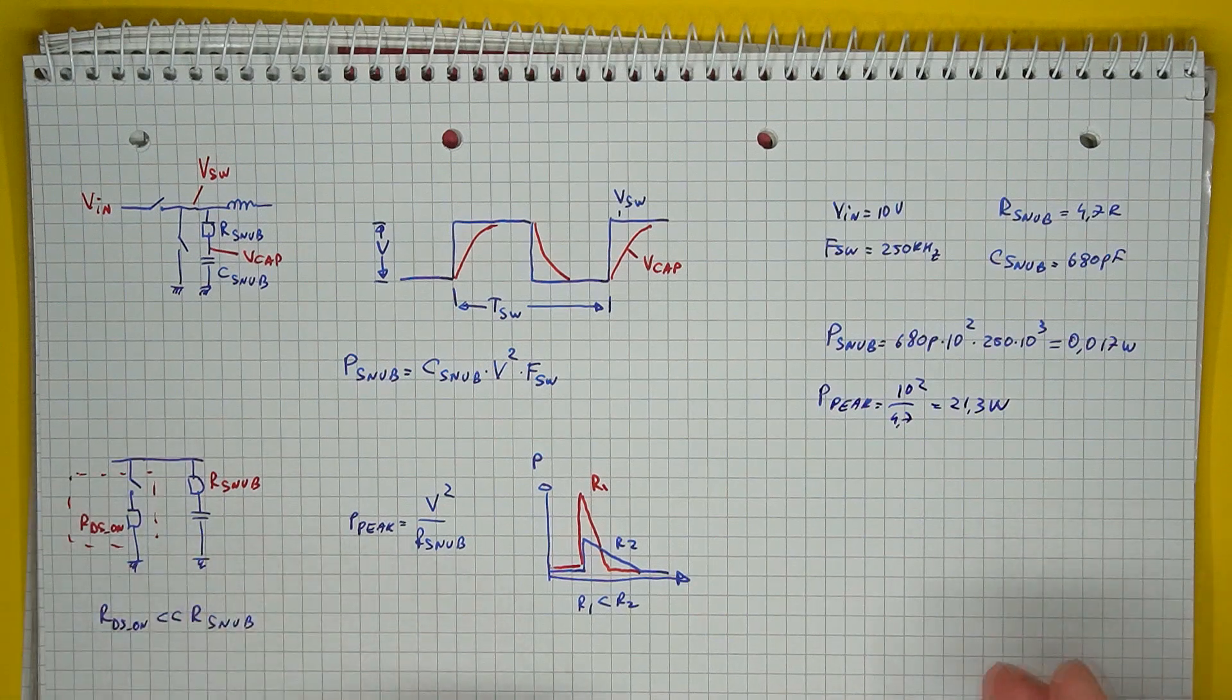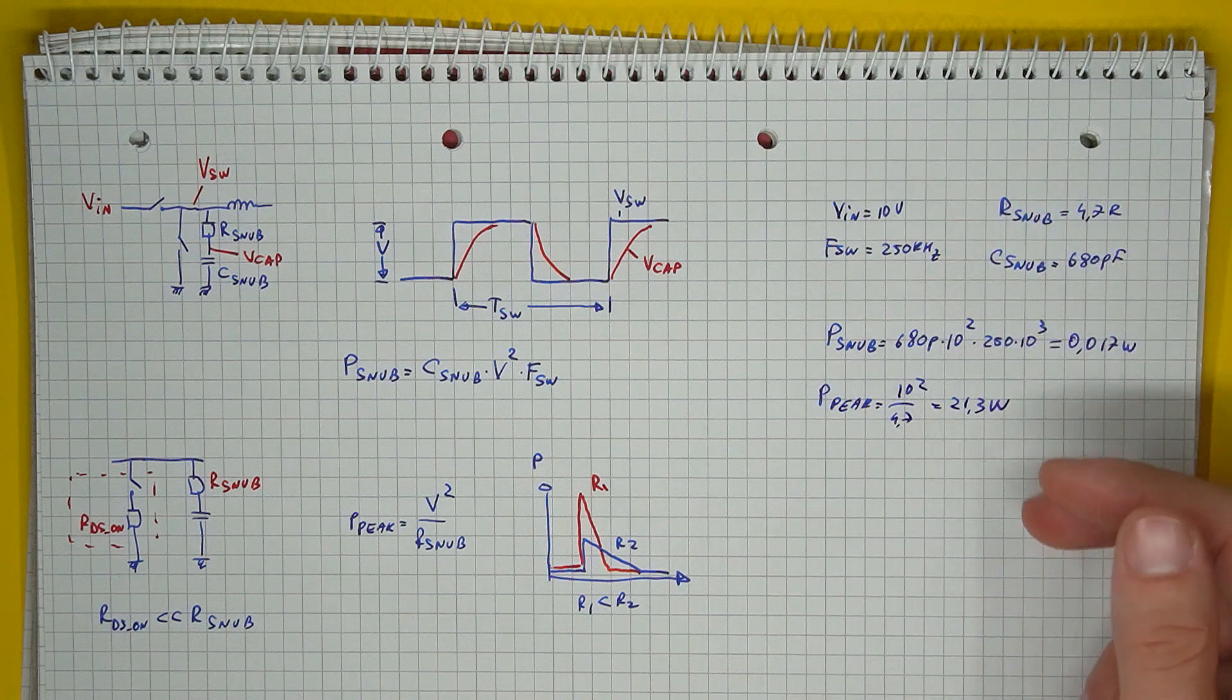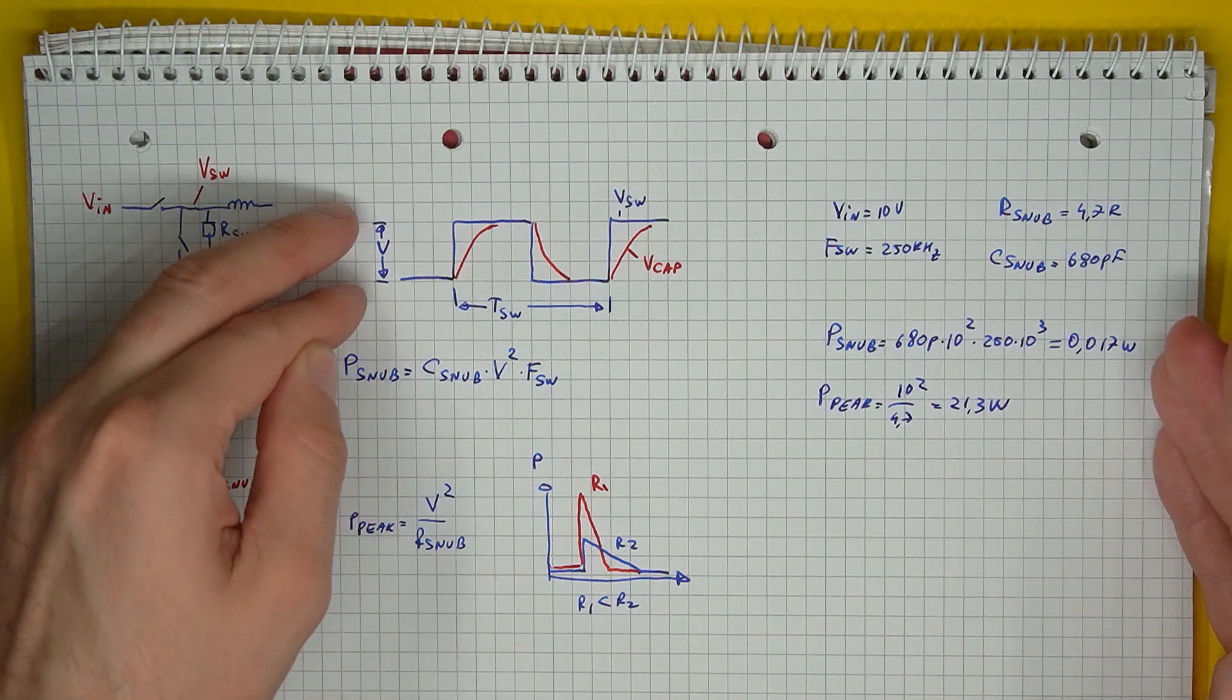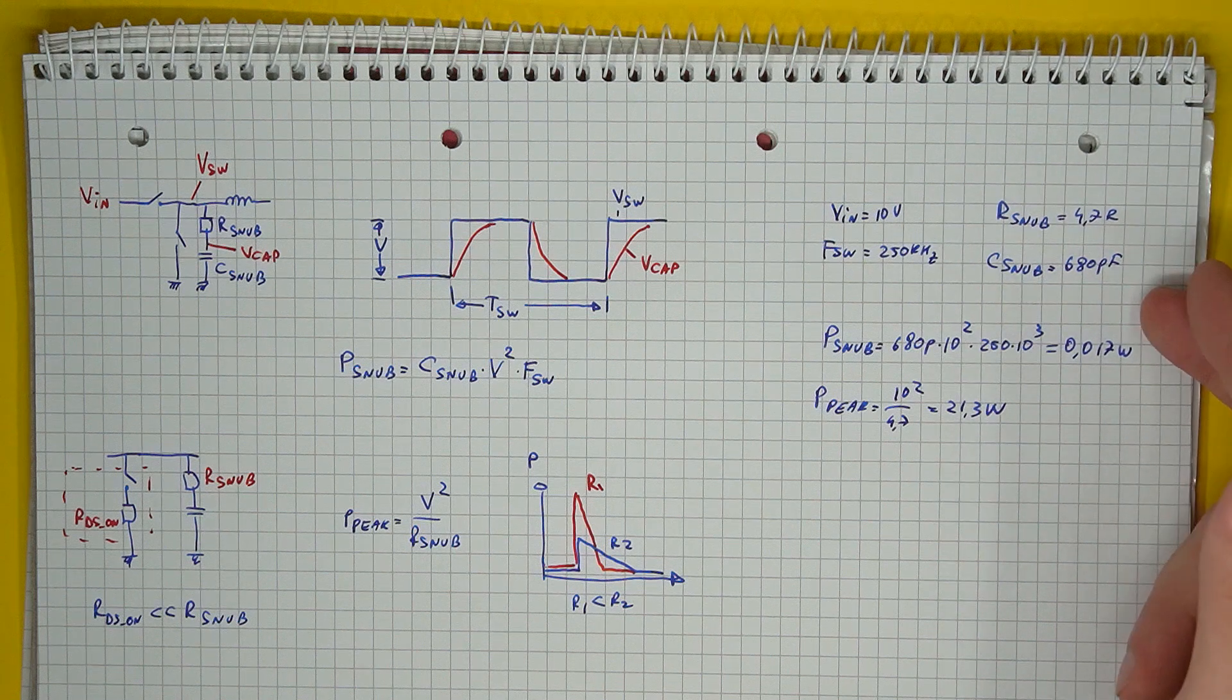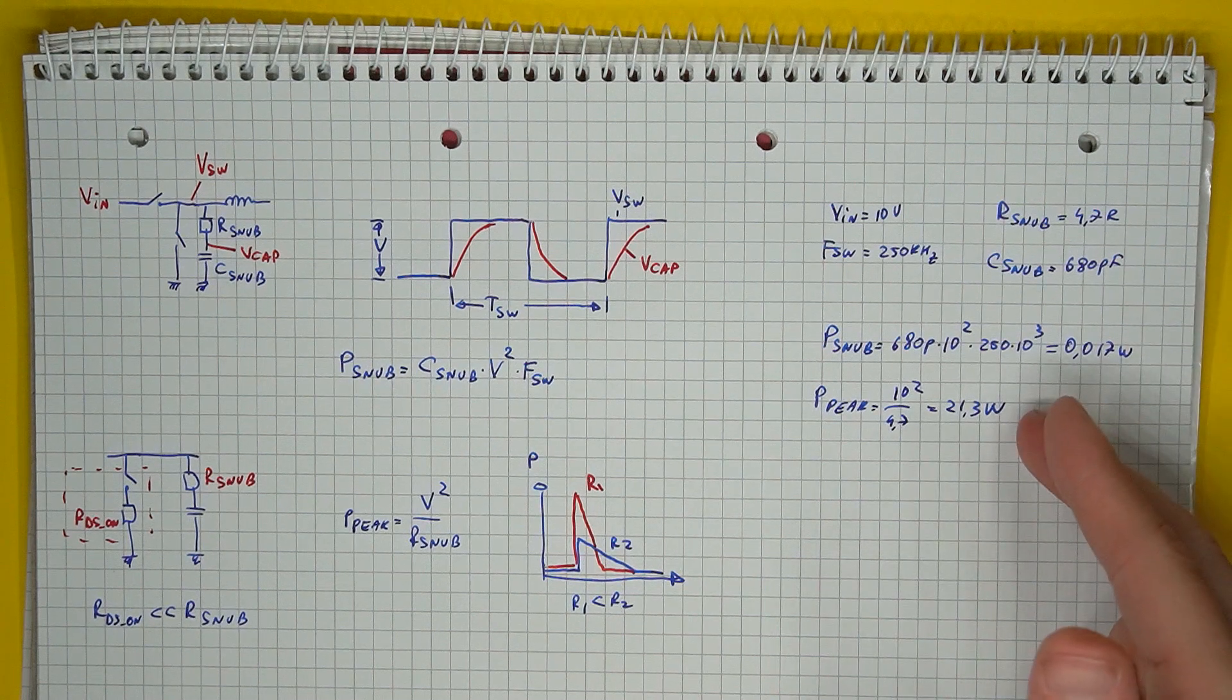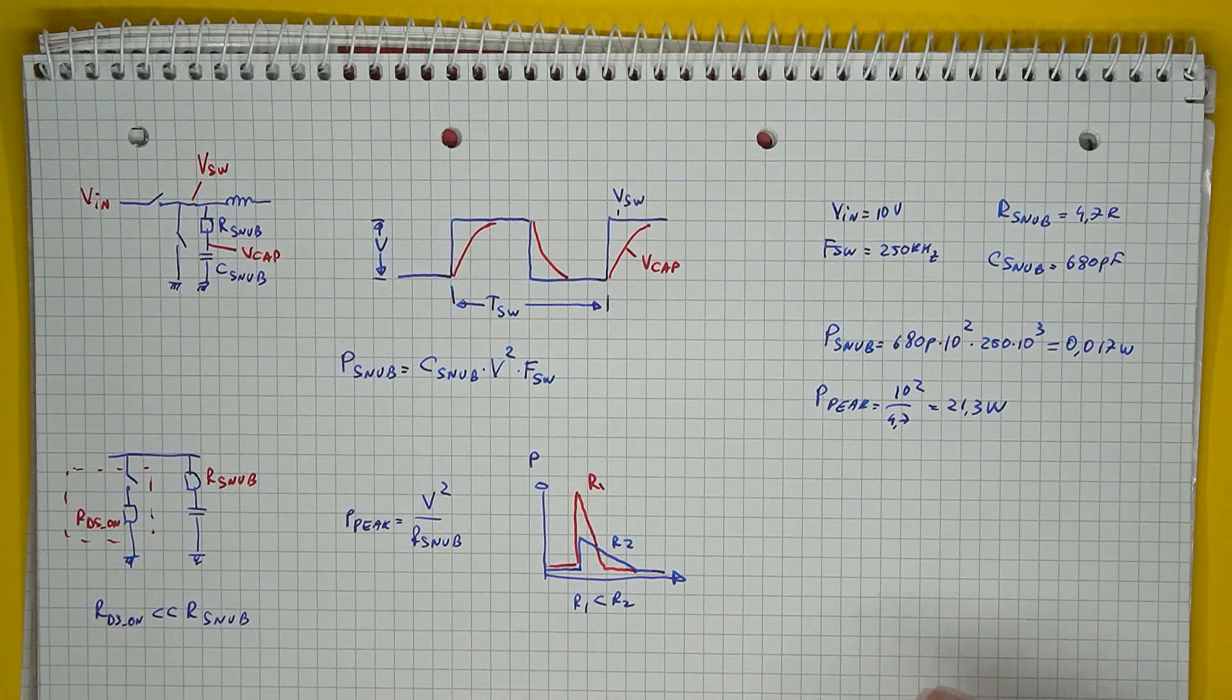So the resistor's value does not influence the total power dissipation, it only impacts the exact peak value. And now if we come to our particular use case, the power supply was running at 250kHz, our supply voltage was 10V, and to make things easy, we can say this is the excursion that the snubber sees. And well, with our given snubber components, we get a total power dissipation of only 17mW, but a peak power dissipation of 21.3W.